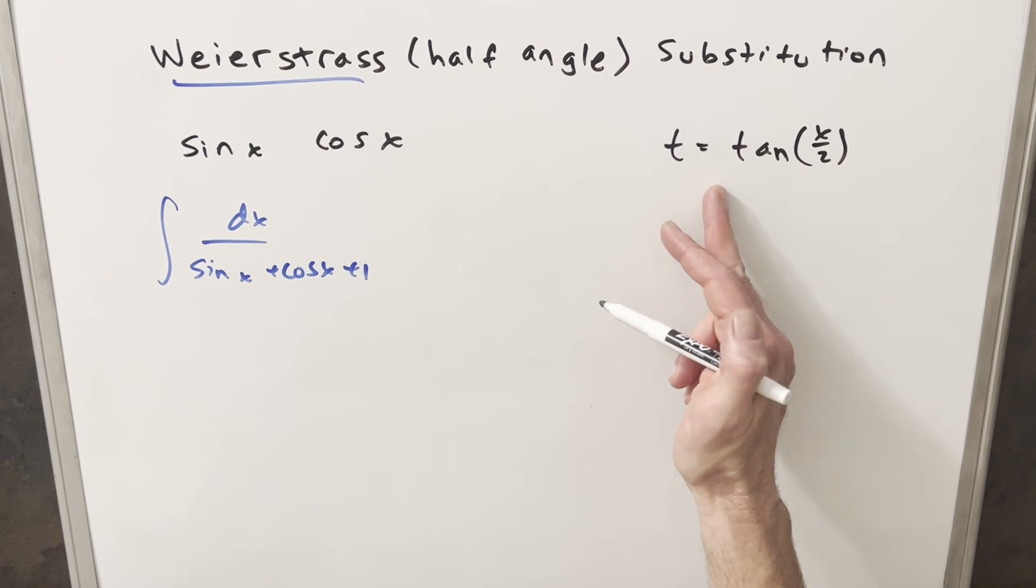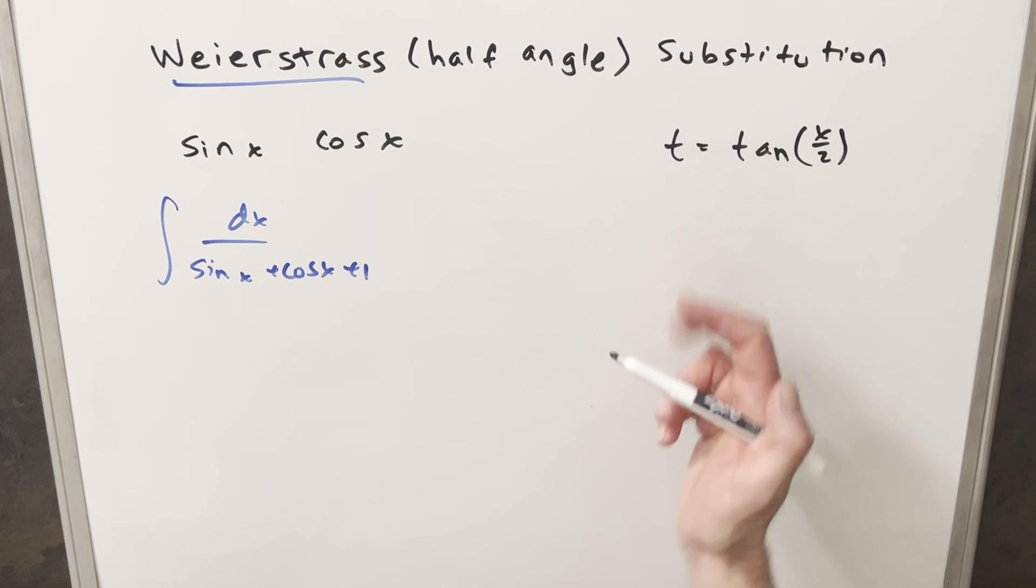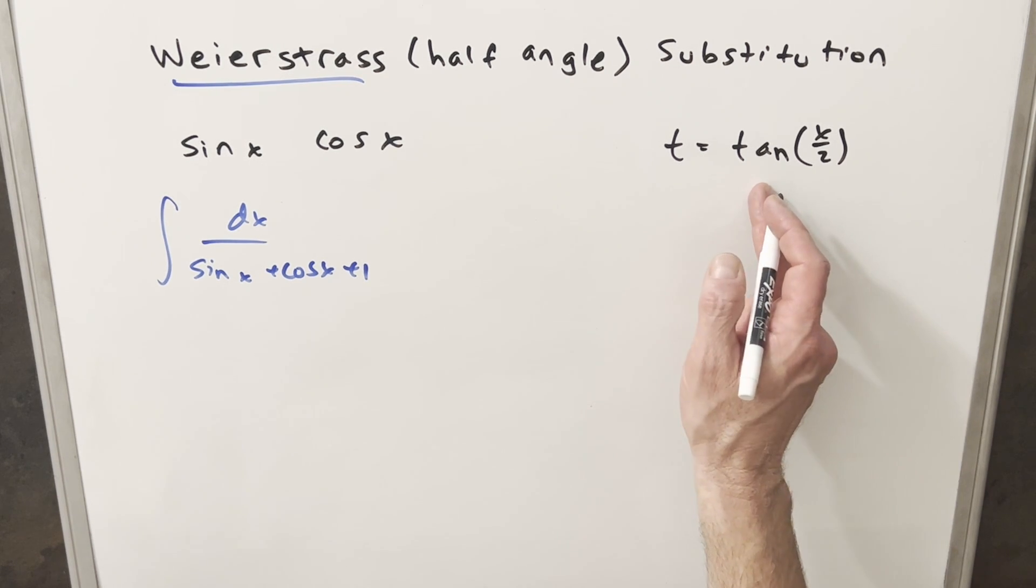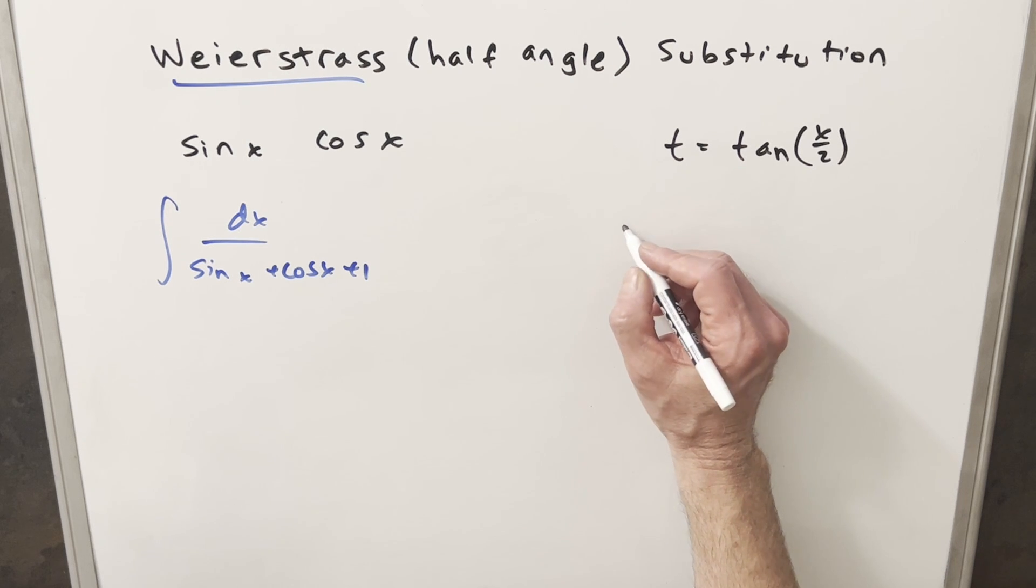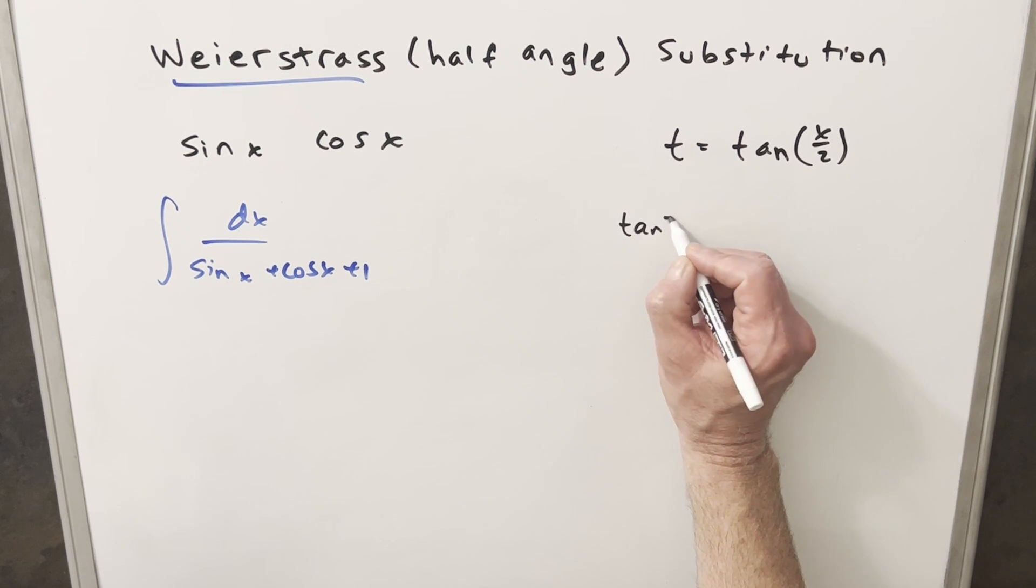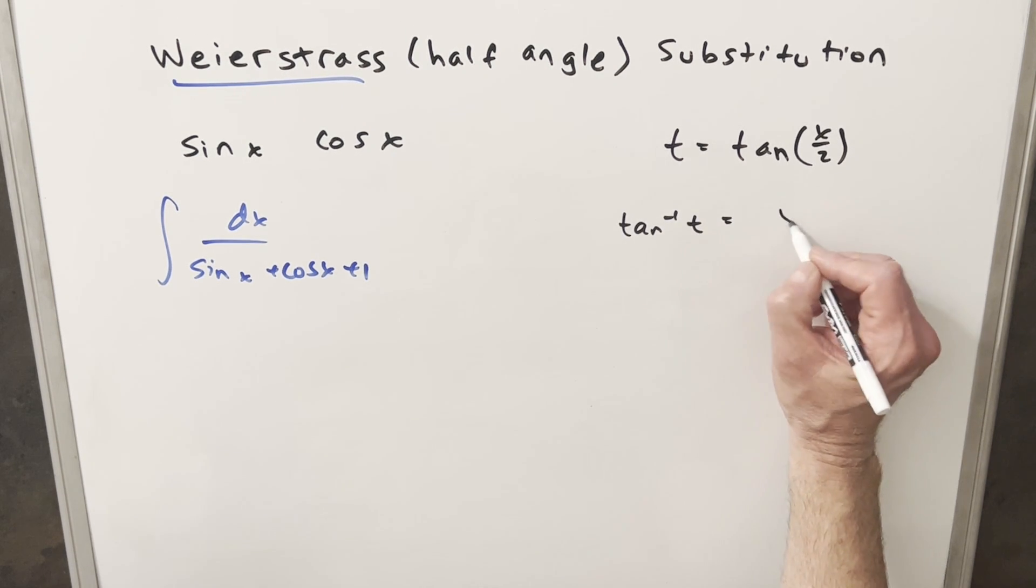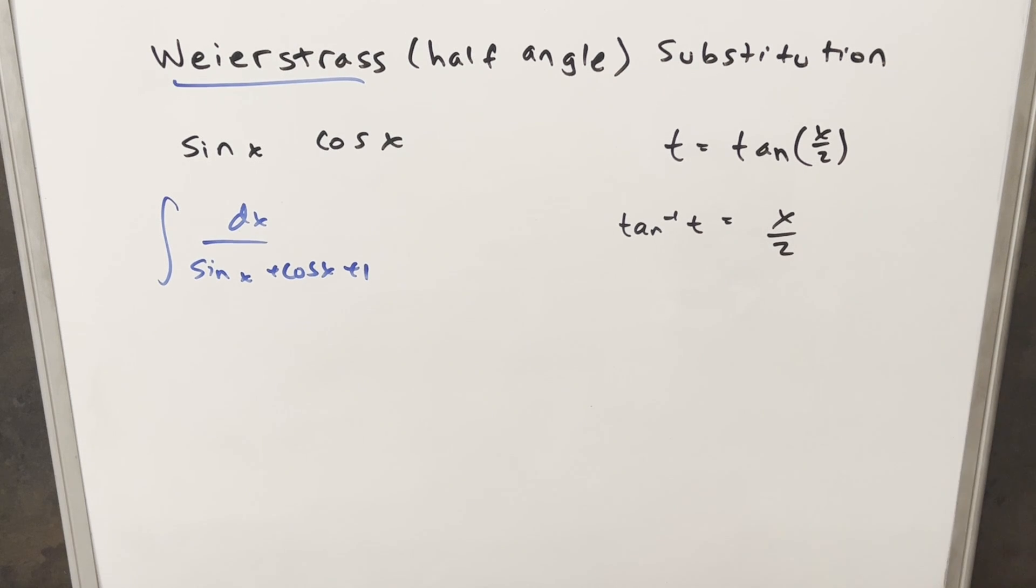So this is our starting point. This is the substitution we want to use, t = tan(x/2). And what I'll do is just rearrange this by taking arctan on both sides. So if we do that, we're going to end up with arctan of t equals x over 2. But then if I just multiply by 2 on each side, then we've isolated our x.